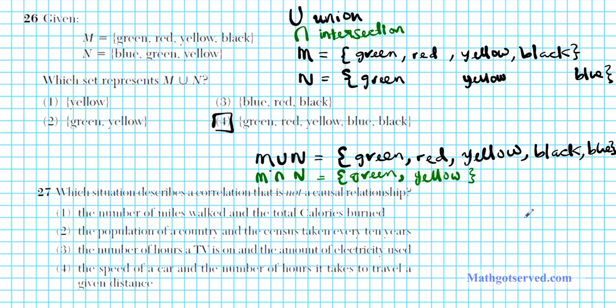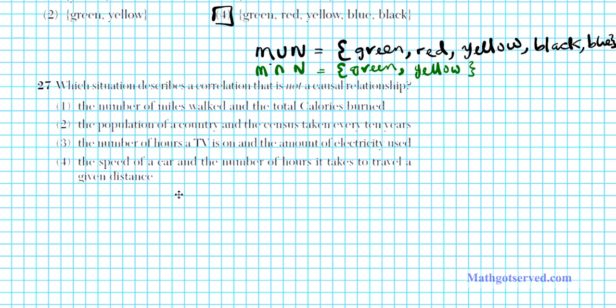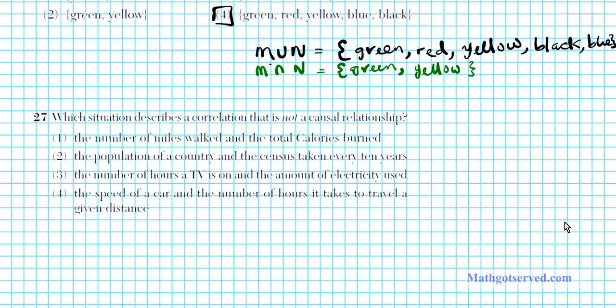Now let's take a look at question 27. It says, which situation describes a correlation that is not a causal relationship? Causal relationship basically means, let's say, you have two things, A and B. If there's a causal relationship, a change in A is going to cause a change in B. If a change in A has no bearing on B at all, then it's not a causal relationship.